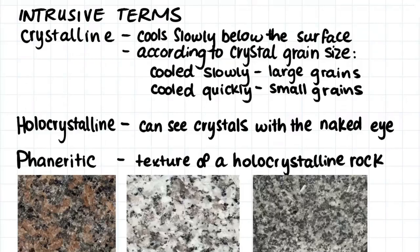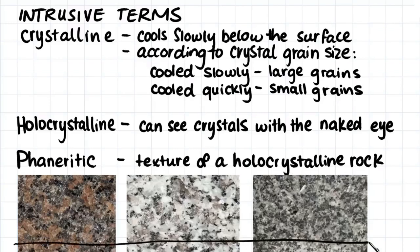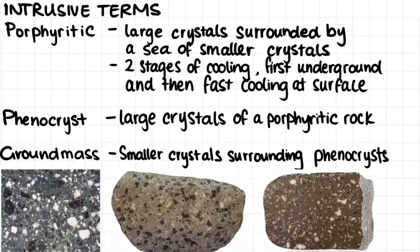Intrusive igneous rocks are almost always crystalline, as they cool slowly below the earth's surface. The term holocrystalline means that we can see the crystals with the naked eye, and all of these samples here are clearly holocrystalline. Phaneritic means the rock has a texture where we can feel the grains of the crystals on the surface. Porphyritic means we have large crystals in the rock which are surrounded by a sea of smaller crystals, as we can see in these samples here.